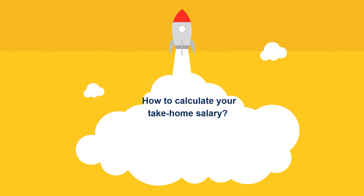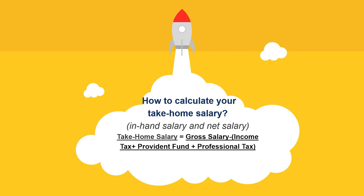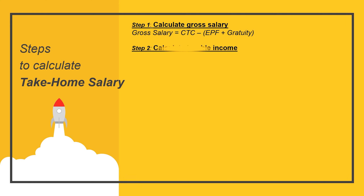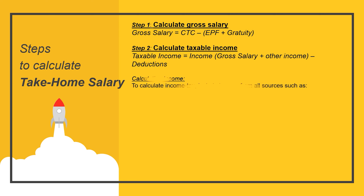How to calculate your take-home salary? We have provided some easy steps. In order to calculate take-home salary, subtract the income tax, provident fund and professional tax from the gross salary. Step 1: Calculate gross salary — gross salary equals CTC minus EPF plus gratuity. Step 2: Calculate taxable income — taxable income equals income minus deductions. In order to determine the part of your income that is taxable, subtract allowances, professional tax, medical bills, medical insurance, tax-saving investments if any, and other deductions from your gross salary.